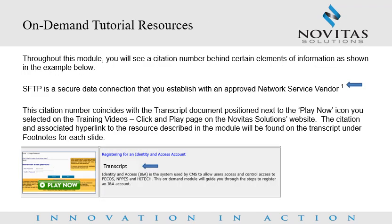Throughout this module, you will see a citation number behind certain elements of information. This citation number coincides with the transcript document positioned next to the Play Now icon you selected on the Training Videos Click and Play page on the Novitas Solutions website. The citation and associated hyperlink to the resource described in the module will be found on the transcript under footnotes for each slide.